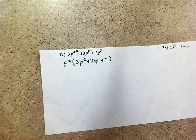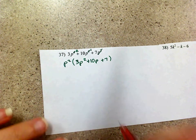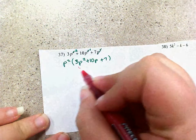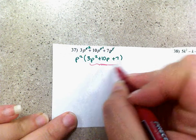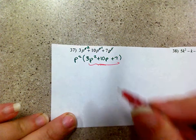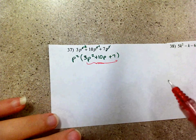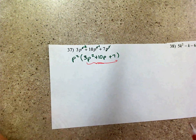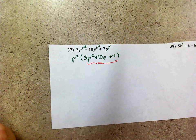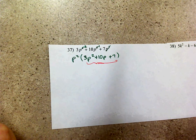Now what I need to do is factor this right here. I've already factored out p squared, so now I need to factor the trinomial 3p squared plus 10p plus 7. I'm going to do bottoms up. Mr. Hines did factor by grouping, so if there's one you prefer versus the other, go ahead and do that one.